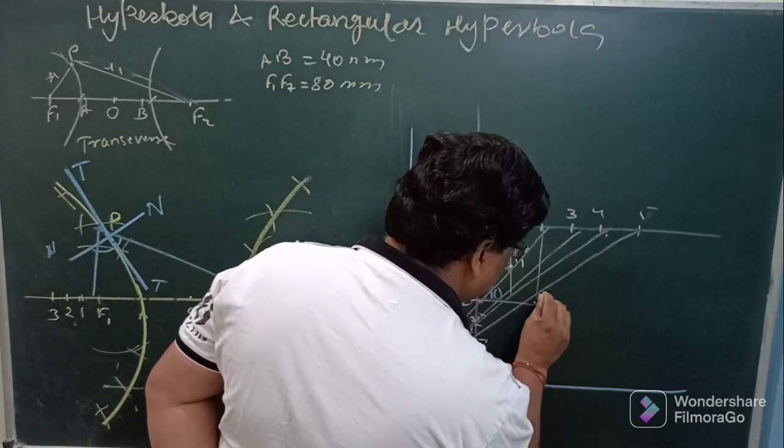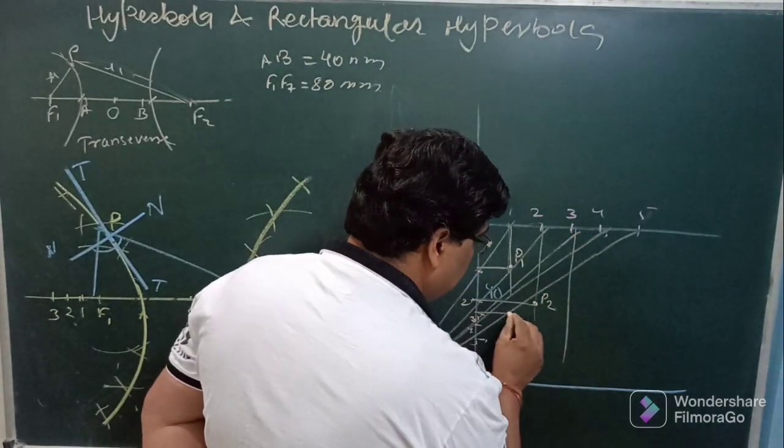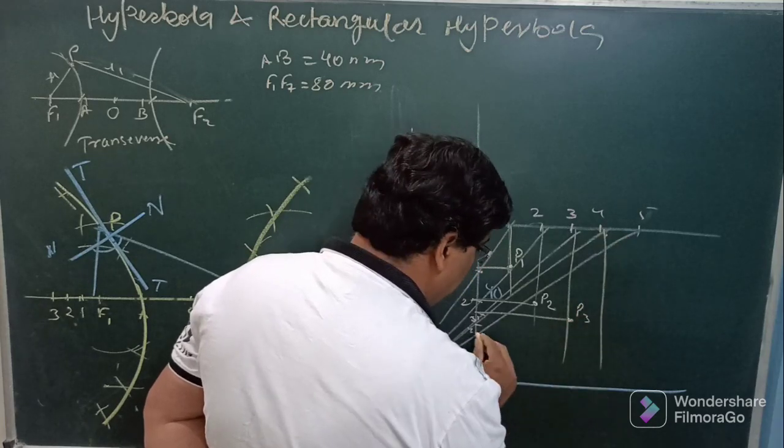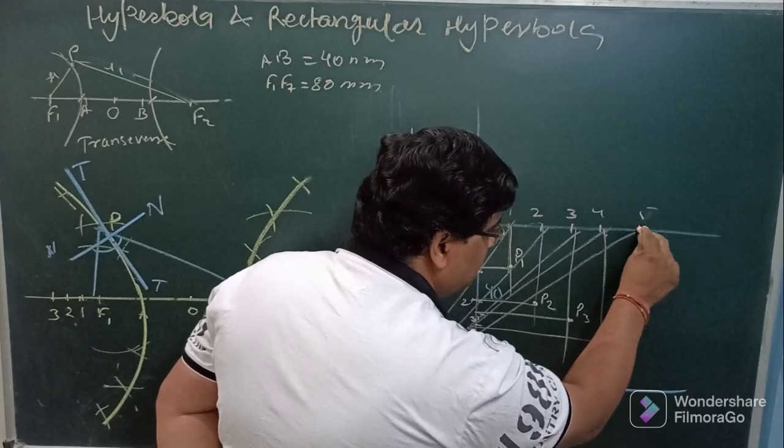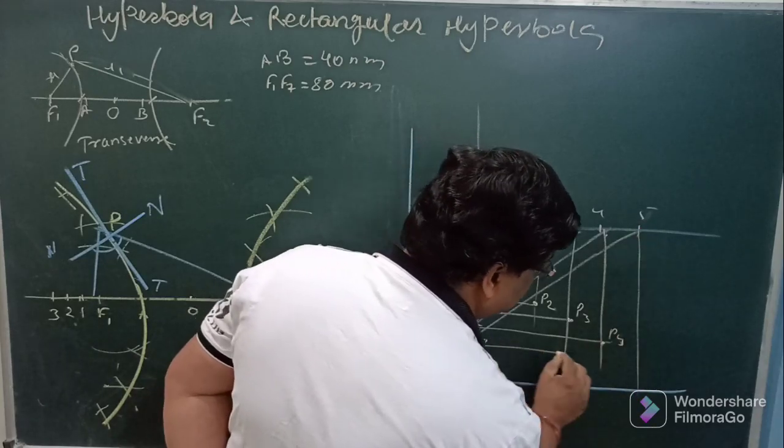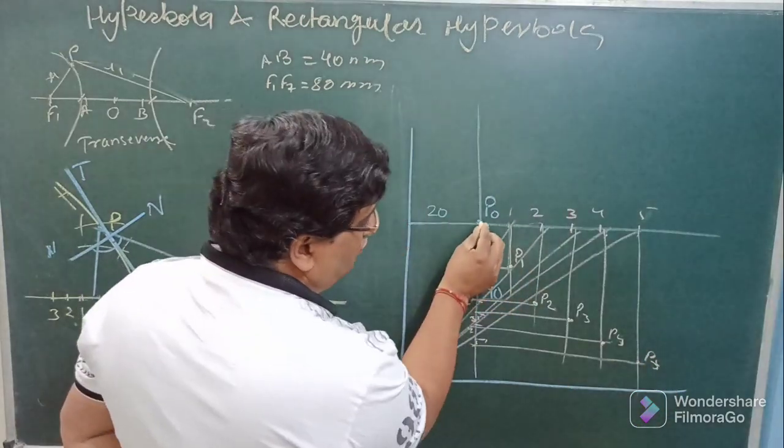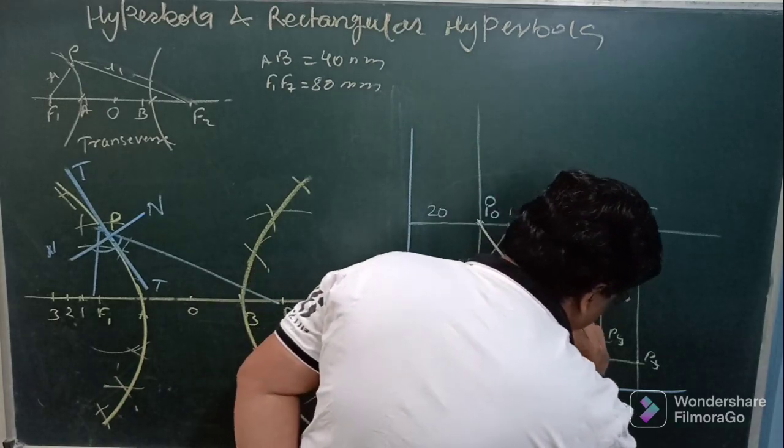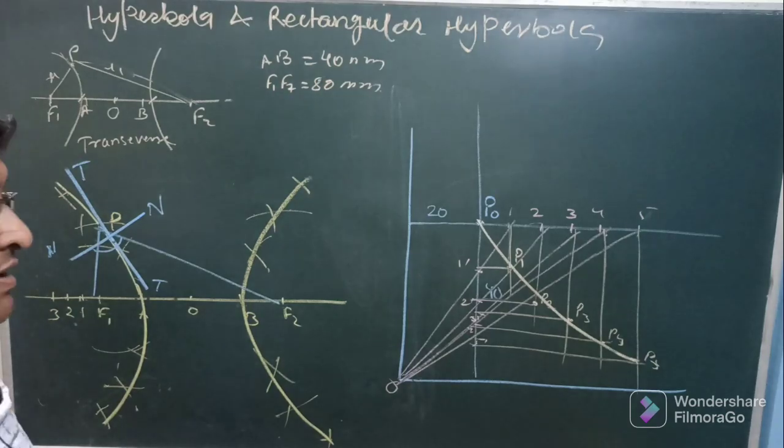Then p3 may be obtained, p4 may be obtained, and p5 may be obtained. When I join all these points, this is the rectangular hyperbola.